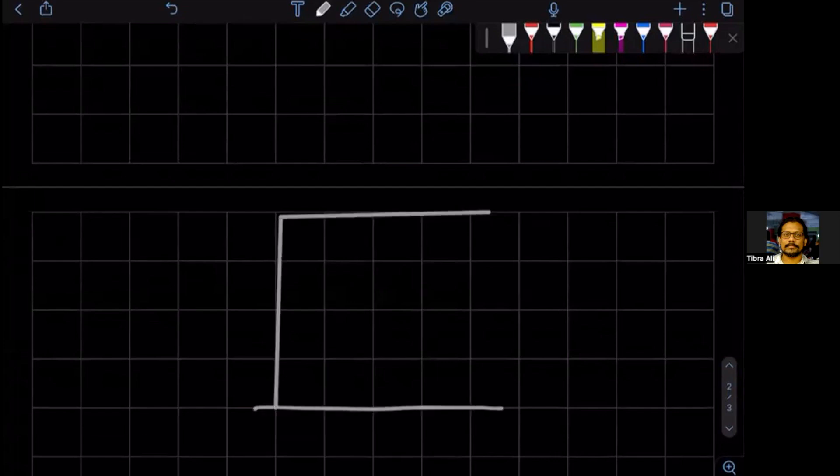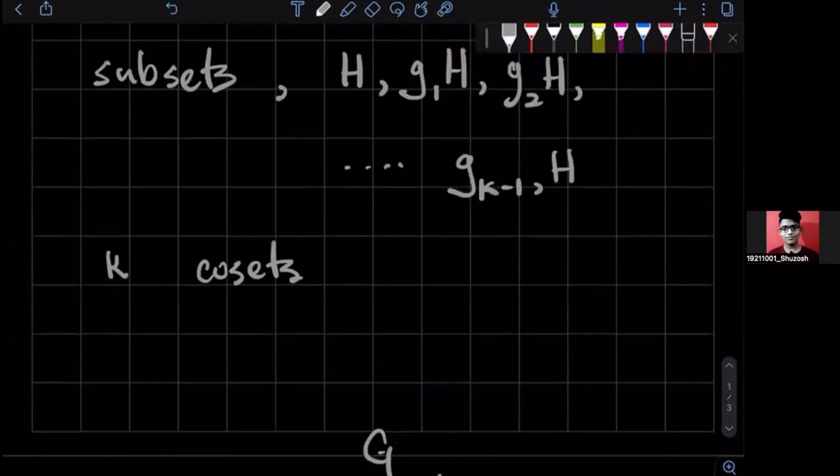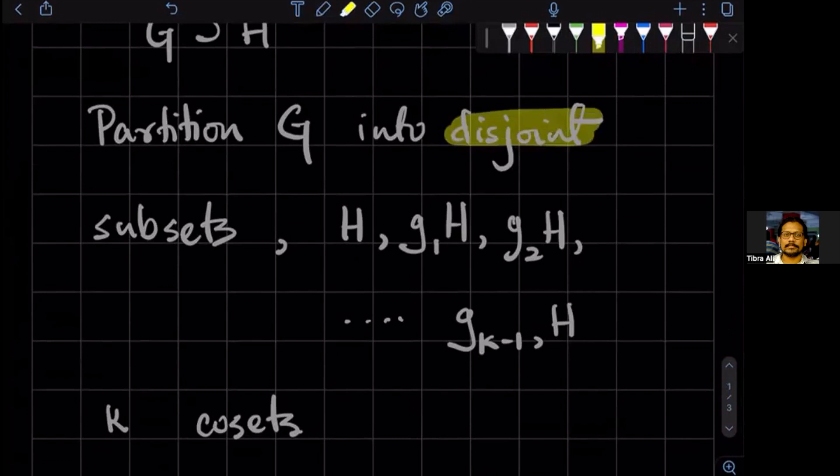If I look at a pictorial representation of this, you know, this is our group, and the coset construction divides it into little bits. This is a subgroup, but the other ones are not subgroups but they're sets. The idea here is that the partition is in terms of disjoint subsets. There is no overlap.